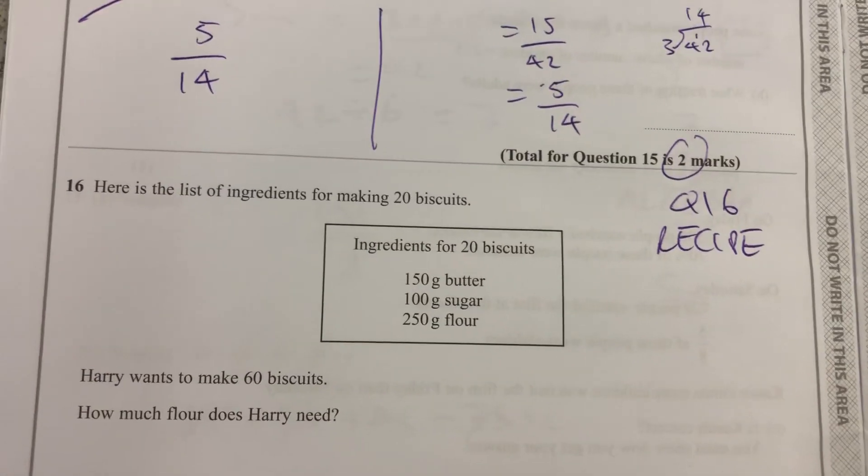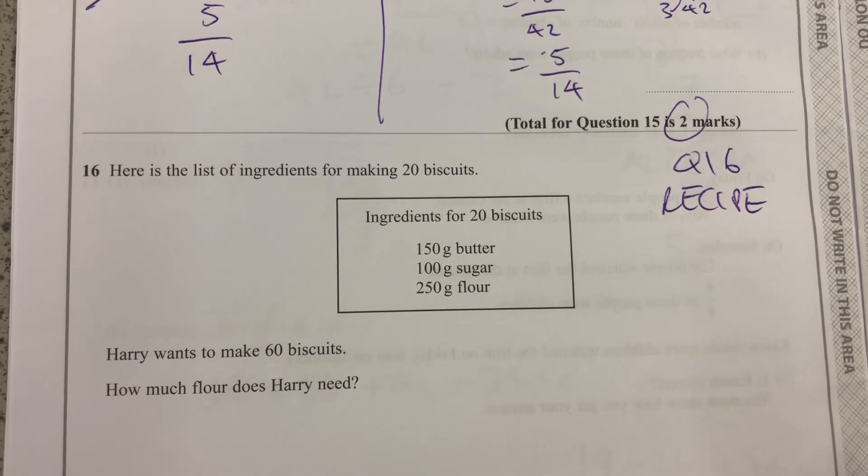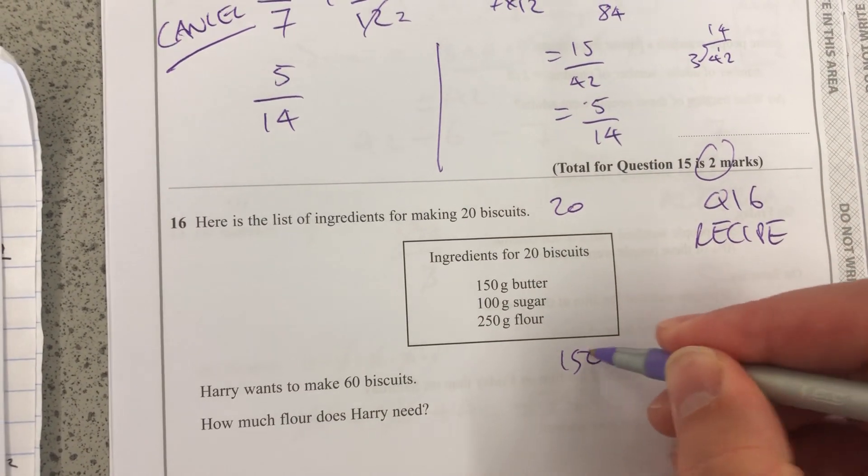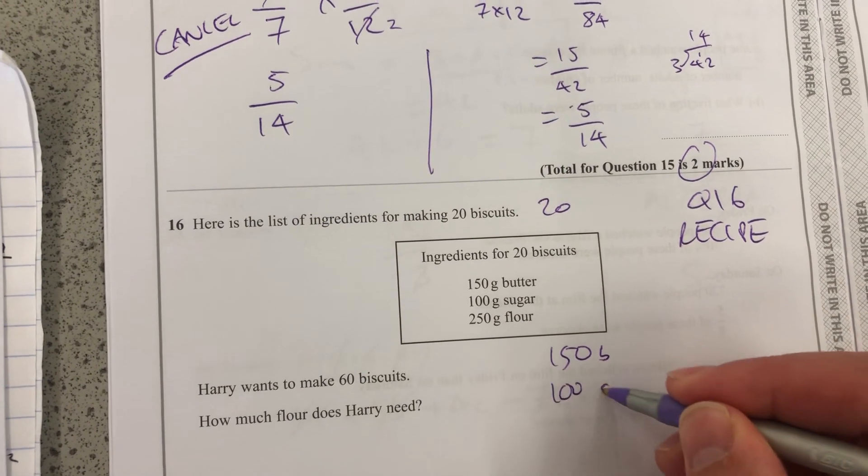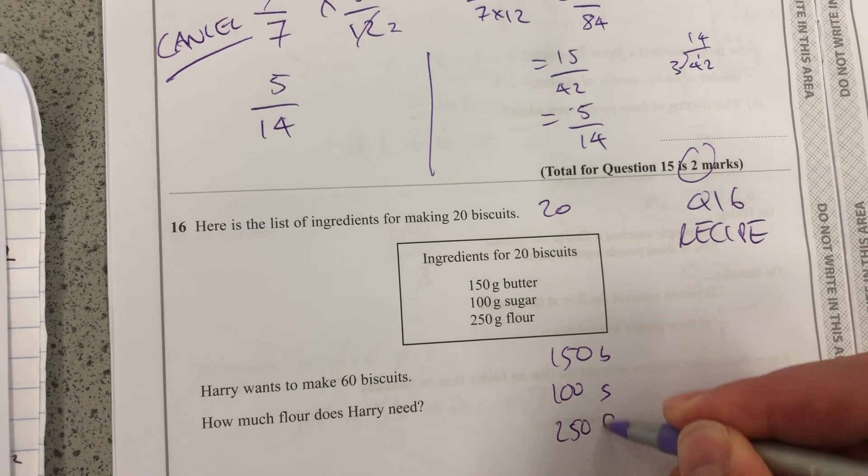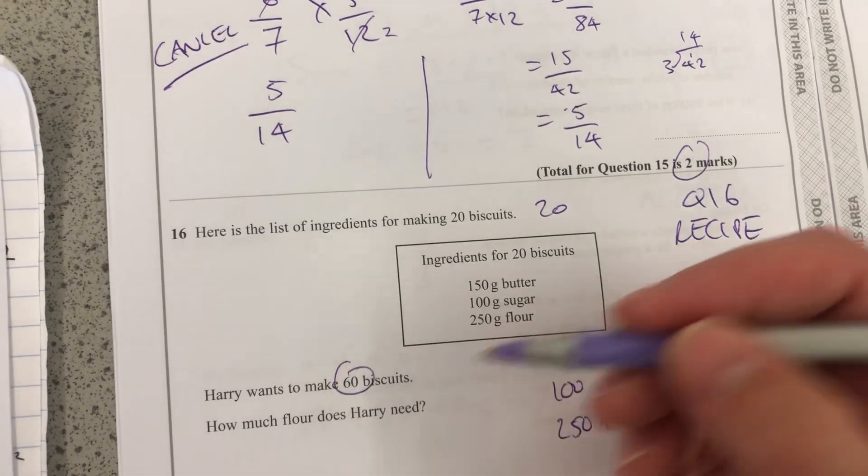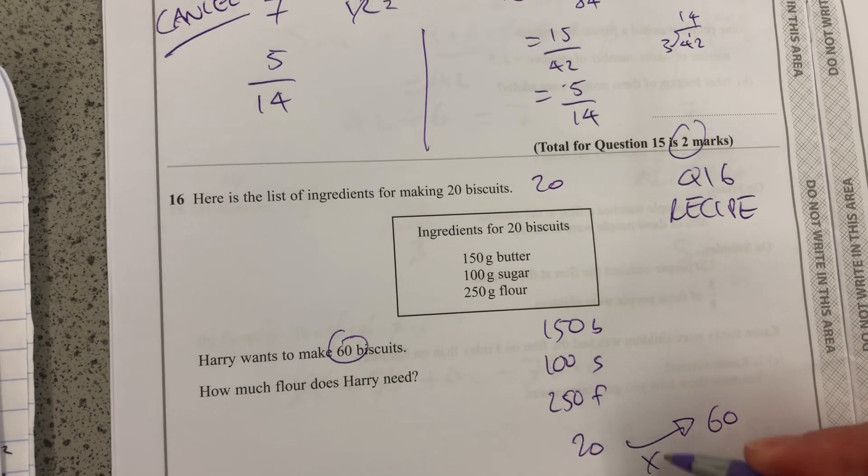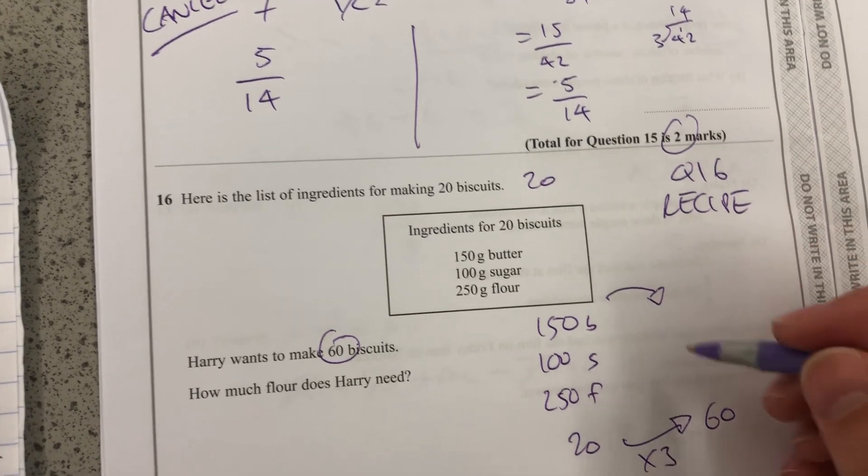Okay, question 16. Here's the list of ingredients for making 20 biscuits: 150 grams butter, 100 grams sugar, 250 grams flour. I want to make 60 biscuits. This is for 20. How do I get to 60? I multiply by 3. So I want to multiply each of these by 3.